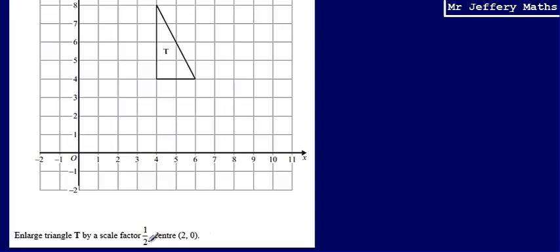First thing I'm going to do is I'm going to identify where that center 2, 0 is. So what I can see is that that is the coordinate just there. And what I'm going to do with this coordinate is I'm going to measure the distance to each of the three corner points on my triangle. And then because it is a scale factor half, I'm going to take that distance and half it.